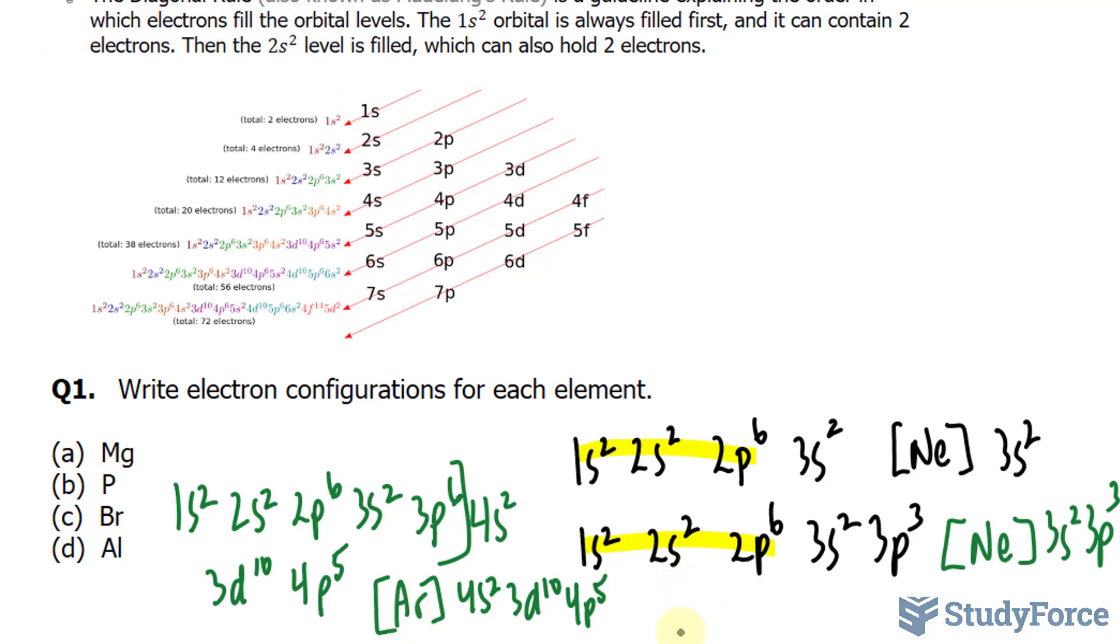And finally, for part d, we have aluminum. Aluminum has 13 electrons. 1s, 2 here, 6 here. That's 10, going this way, another 2, and only 1 in here. You don't need to write that superscript of one.